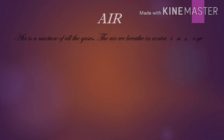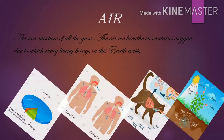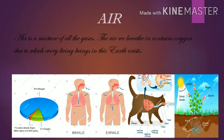Let us look at the definition of air. What is air? Air is a mixture of all the gases. The air we breathe in contains oxygen, due to which every living being on this earth exists. As we can see in this picture, about 78 percent is nitrogen, 21 percent is oxygen, and carbon dioxide and other gases count for one percent.